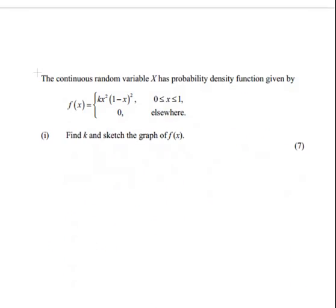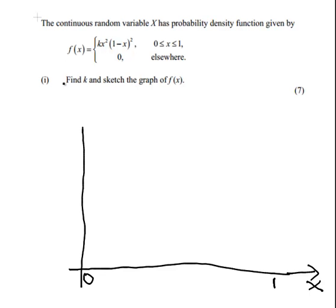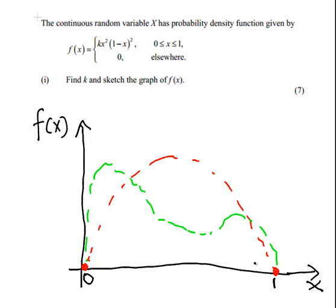The next part we are going to look at is sketching the graph. Essentially what we are going to start off with is something like this. We know it only exists between 0 and 1. If we were to put in 0 here, we get 0 times 0 squared times 1 squared, essentially it would be 0. It's going to look like some sort of graph here.